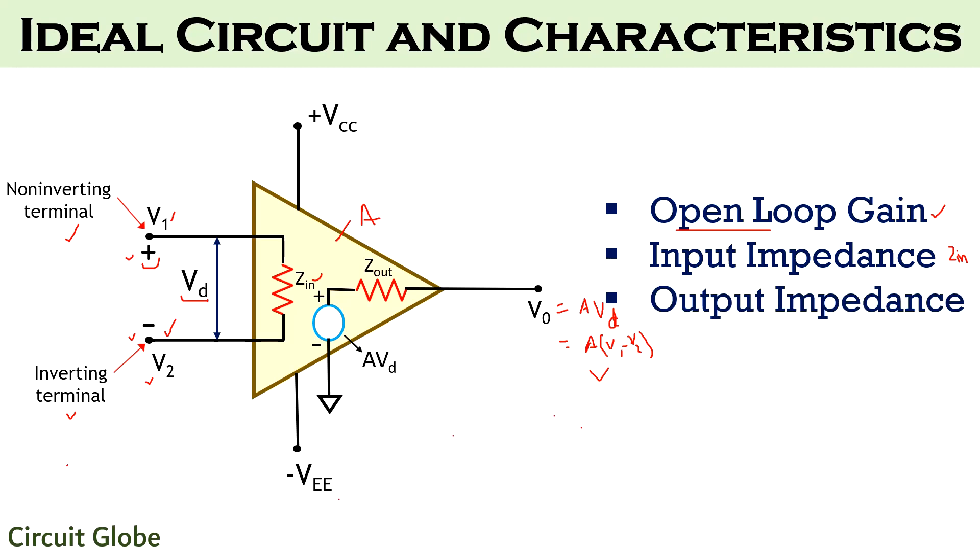Proceeding further, the next characteristic is output impedance represented by Zout. Ideally, the value of the output impedance must be zero so that maximum current from source will get supplied to the load. But when we talk about practical amplifier, then Zout ranges between 100 to 20 kilohms.